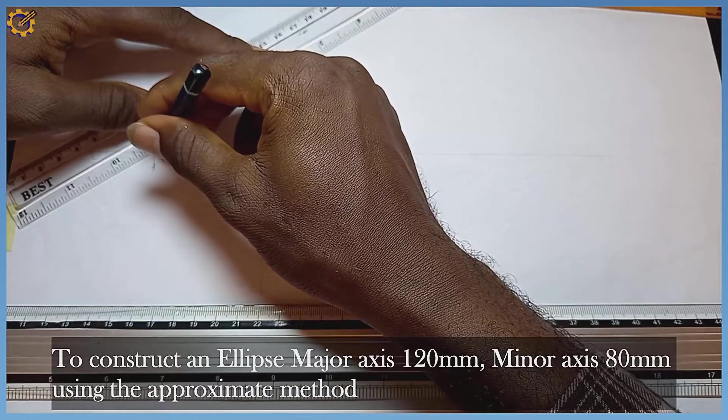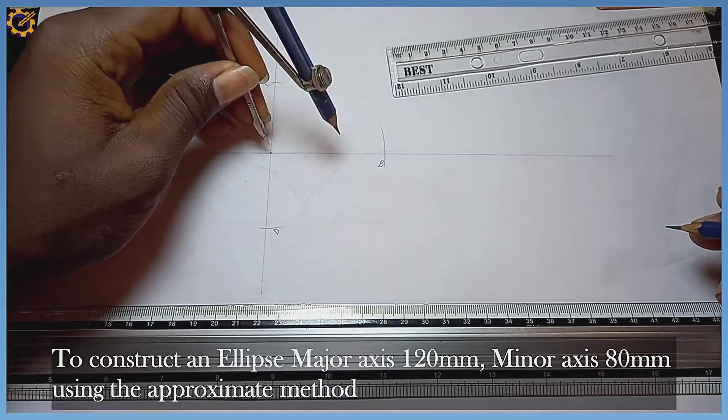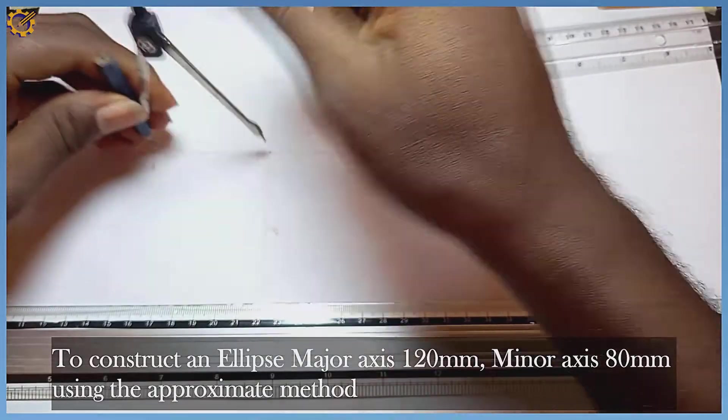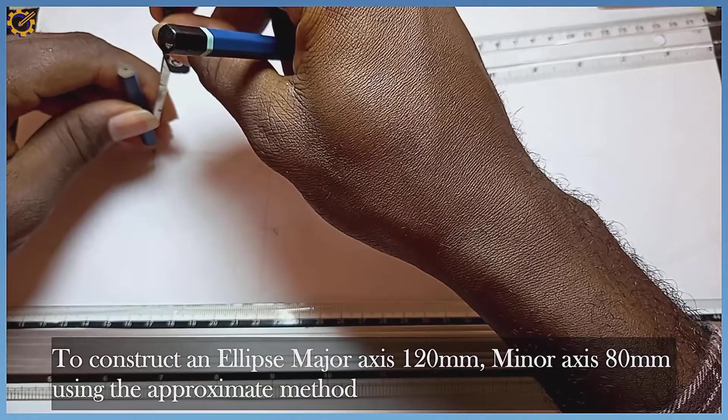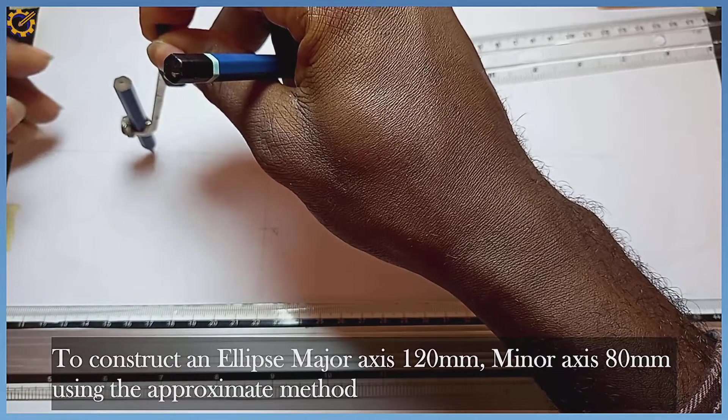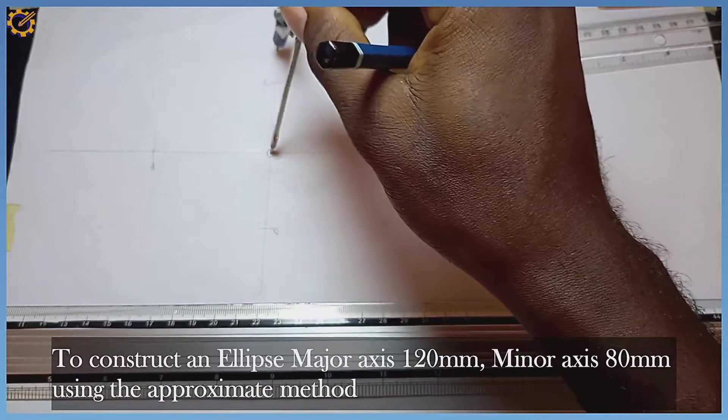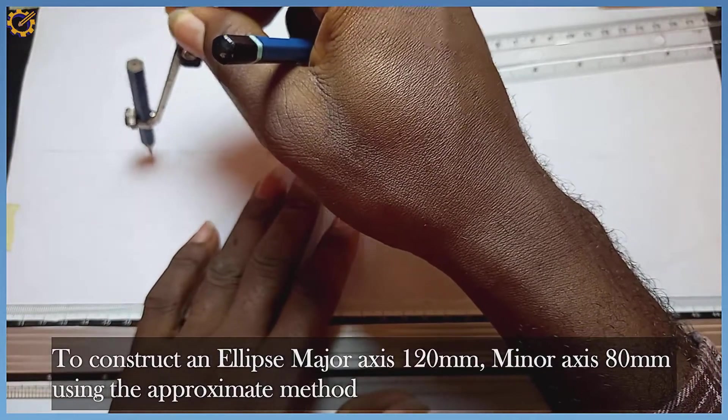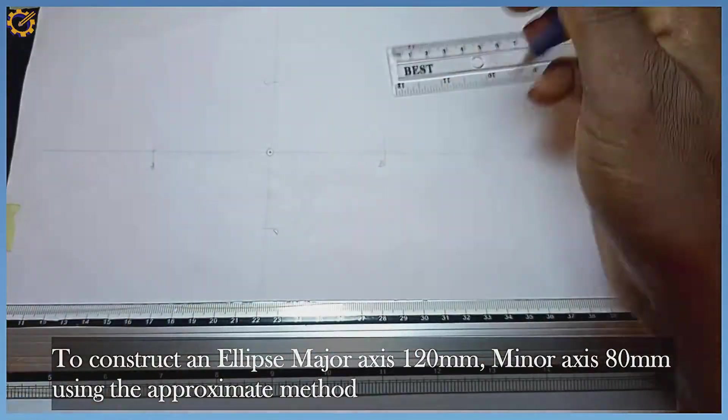After doing that, I'm going to pick my semi-major axis which is OA. This is mark O, this is point A. With point OA, I strike an arc towards the top here. This arc is mark E.